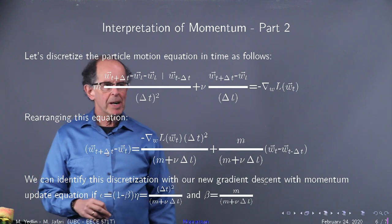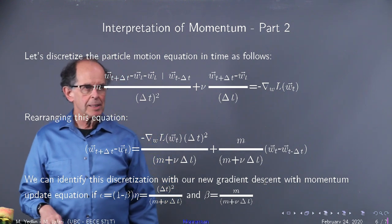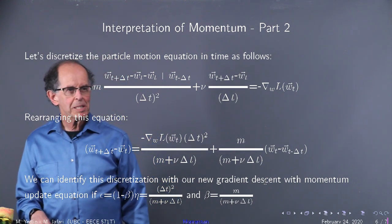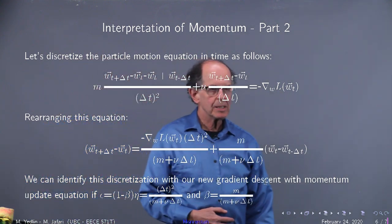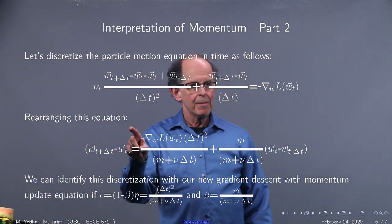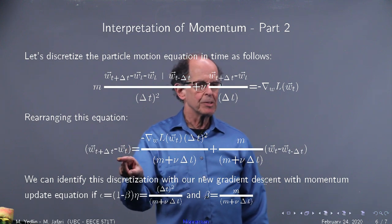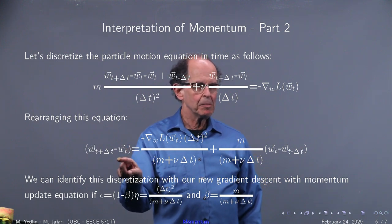Now, we simply rearrange this and solve for, as you see in the second line here, the difference. And that's our delta w update.